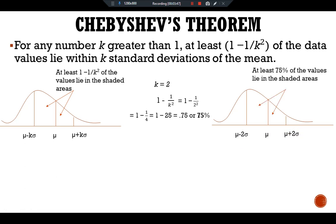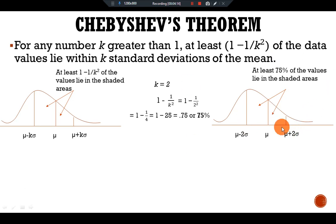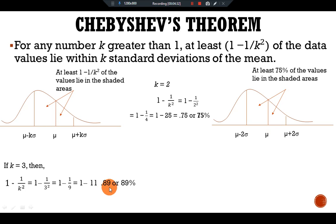We can explain that at least 75 percent of the values lie in the shaded area in these two parts. So around 75 percent of values in this series are given here, and others may be positive or negative outliers. But if k is equal to 3, then our approximation gives us 0.89, which is 89 percent. So according to Chebyshev's theorem, at least 89 percent of values fall within three standard deviations of the mean.